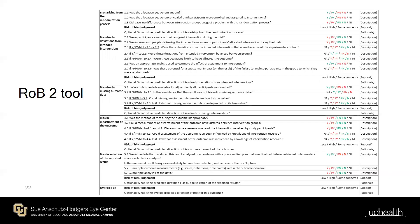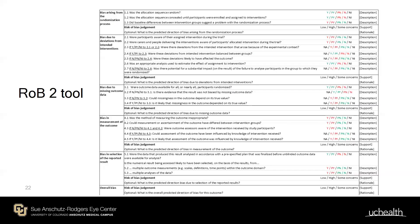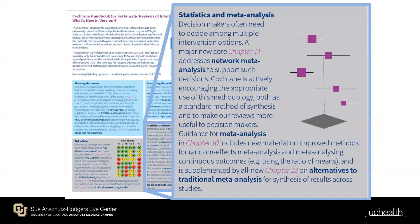On implementation challenges: RoB2 is required for new Cochrane reviews. It requires substantial training — even with the older tool, authors had different interpretations and misunderstood many items. A practical concern is who checks all of this, since the prediction is many studies will end up rated high risk of bias or some concerns.